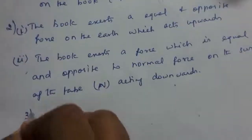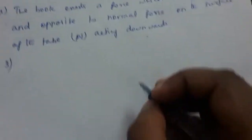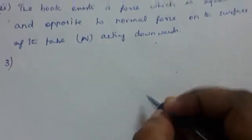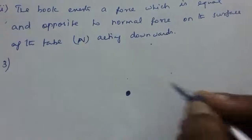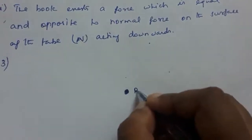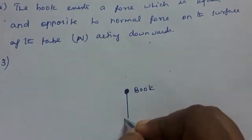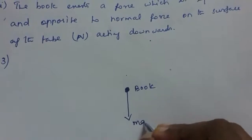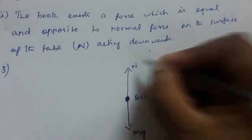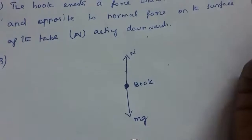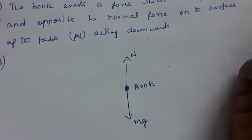Now coming to the third part, we have to draw a free body diagram. For drawing the free body diagram, we consider the book. There are two forces acting on it: the downward force Mg and the normal force N acting upward. This is how we draw the free body diagram.